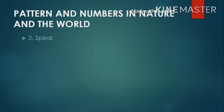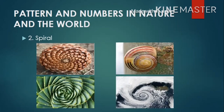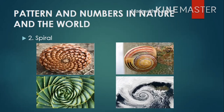The next pattern is spiral pattern, which is defined as a curve pattern that focuses on a certain point and a series of circular shapes that revolve around it. You may notice that some of the examples presented are from the natural environment. The reason why plants use a spiral form is because they are constantly trying to grow but stay secure.